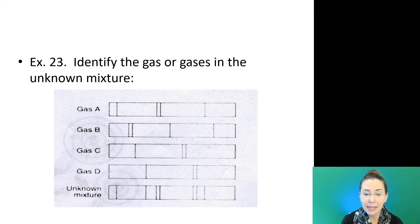If we look at gas C, once again, the very first band on the left doesn't appear in the unknown mixture. So it cannot be present. Finally, gas D. Gas D, we have three bands. All three of those bands appear in the unknown mixture. So our unknown mixture must be a mix of gas A and gas D.